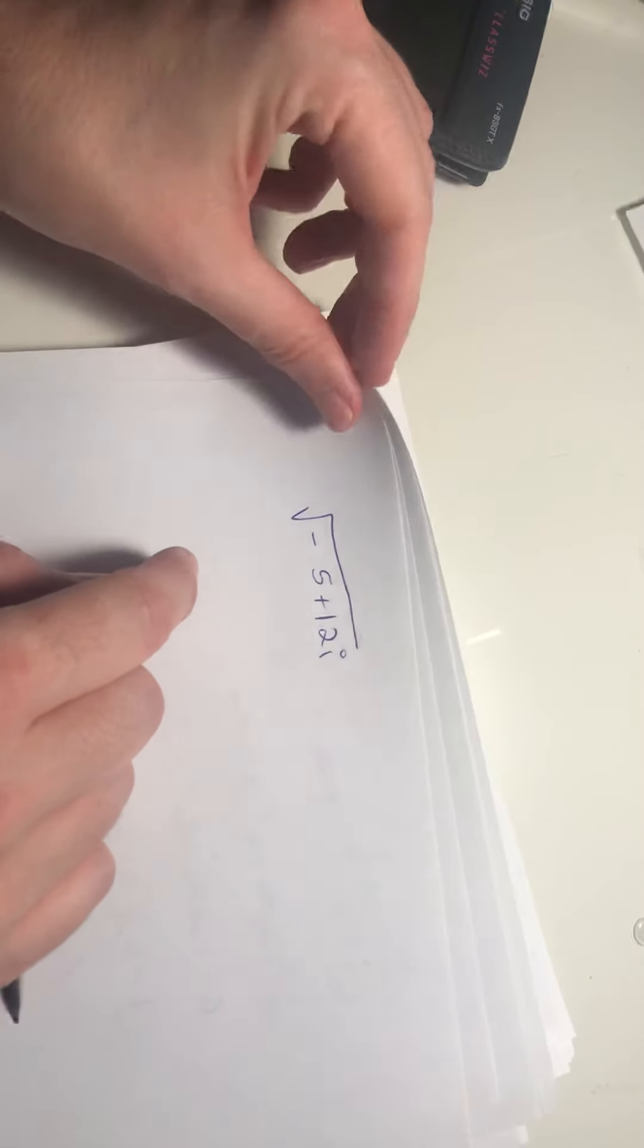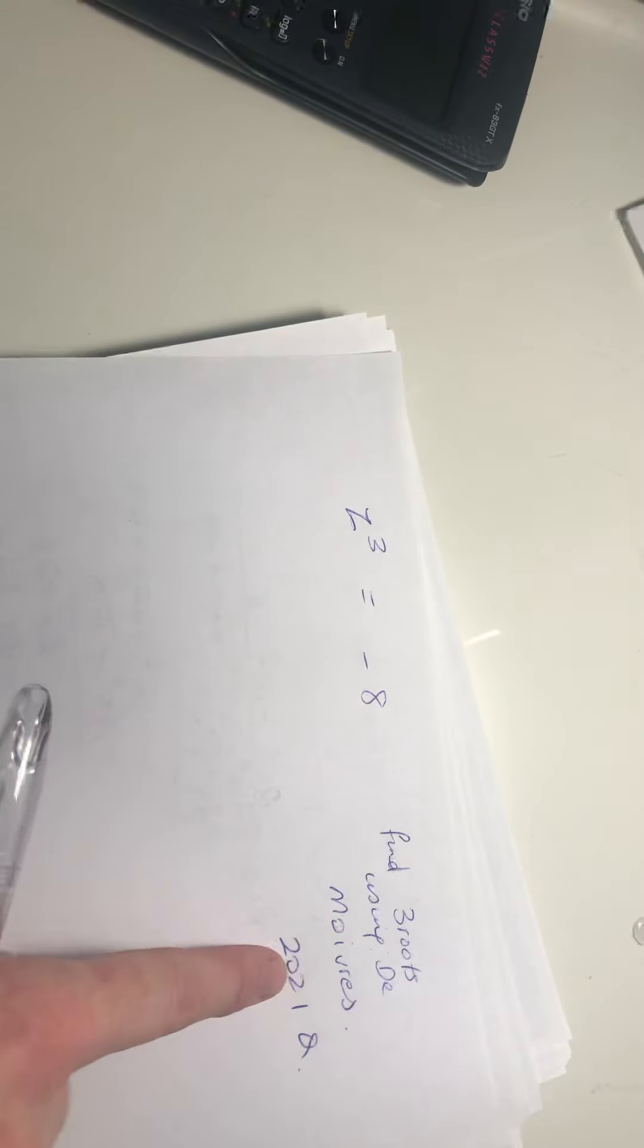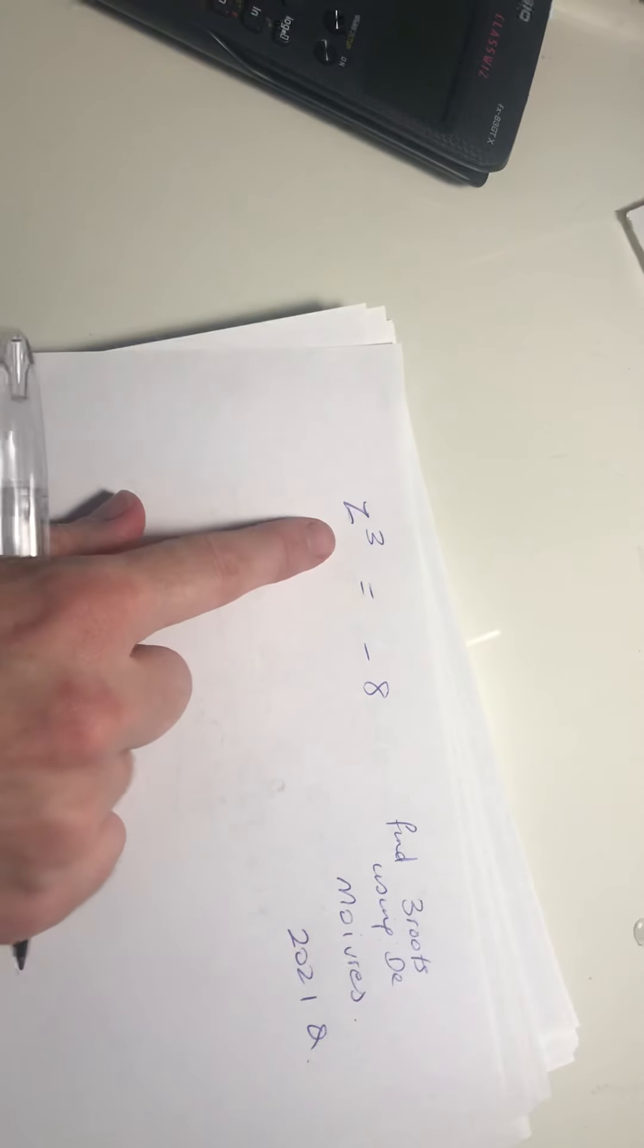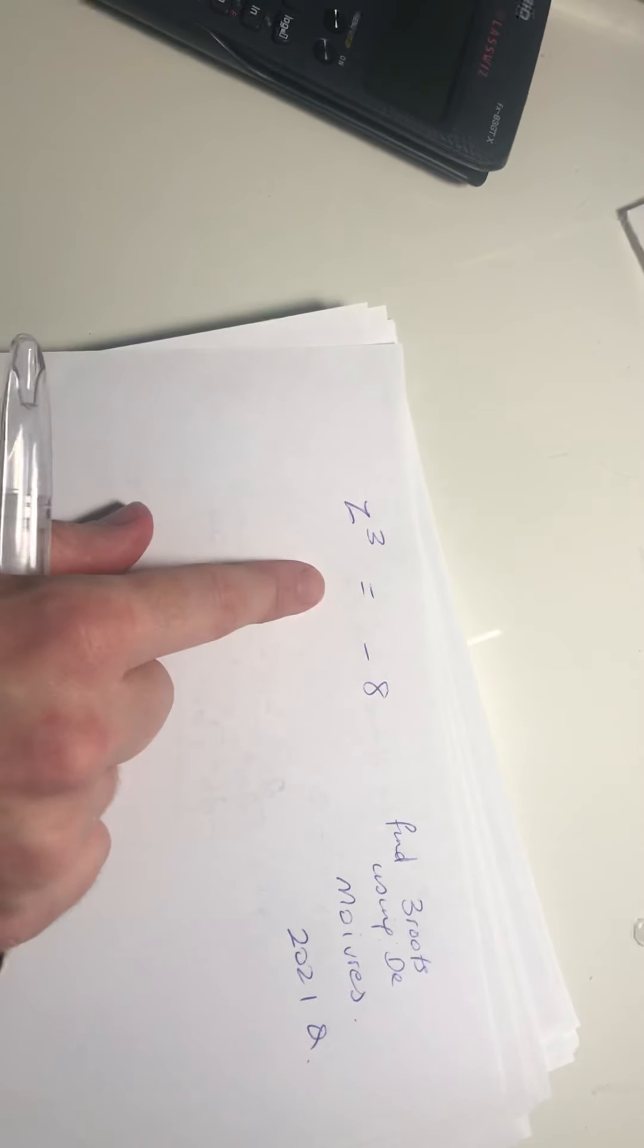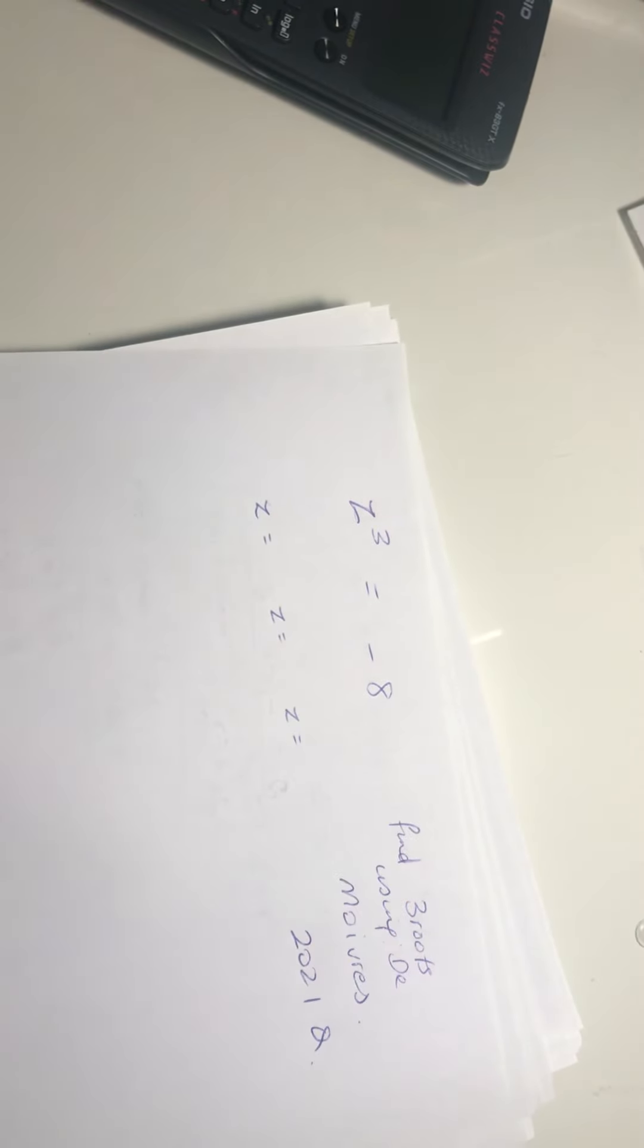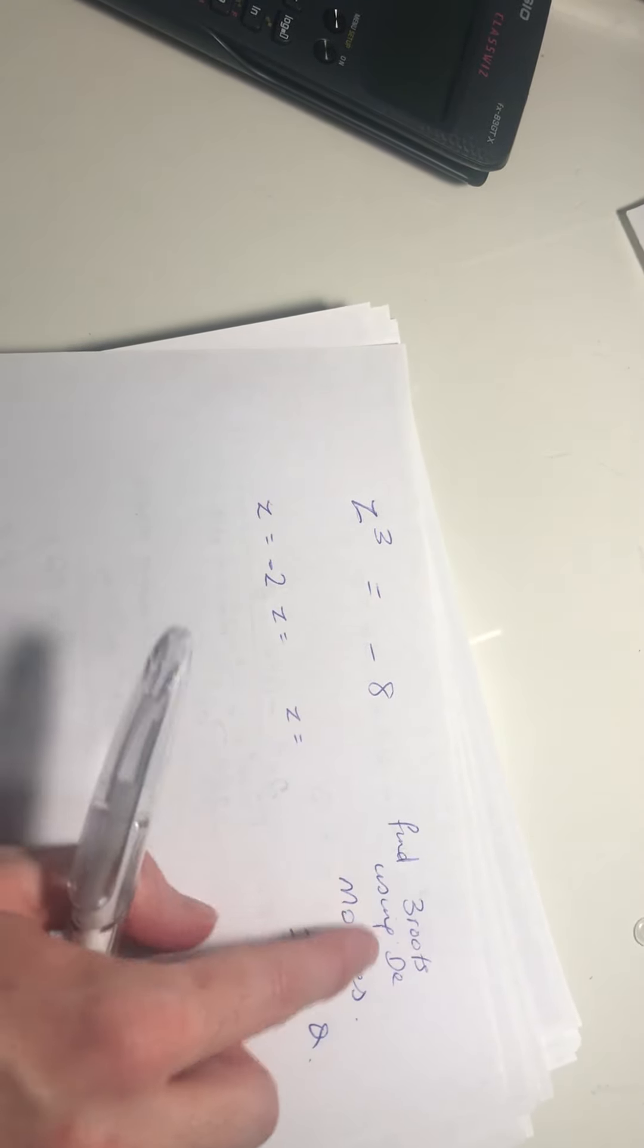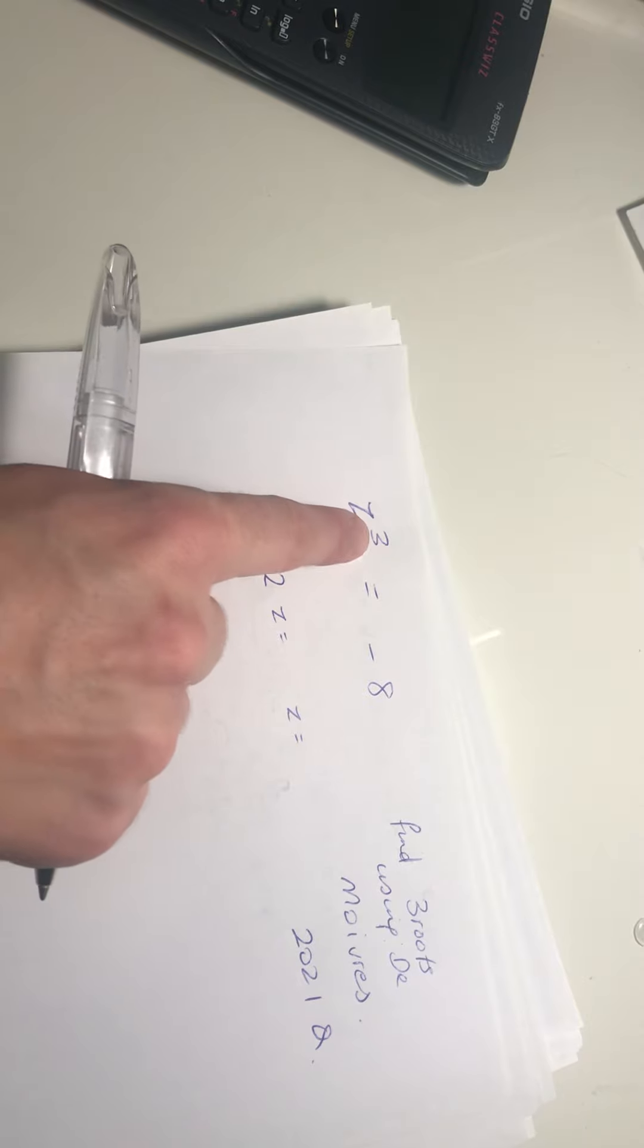So we're only looking for one answer here. In comparison, if I was asked this question here, this is the 2021 complex number question. It says z cubed is equal to minus 8. Find all three roots and you can use De Moivre's theorem. Because you're solving an equation, it's a cubic equation, so at the very end you're looking for z equals, z equals, z equals. Whereas here I'm literally just evaluating the square root of something.